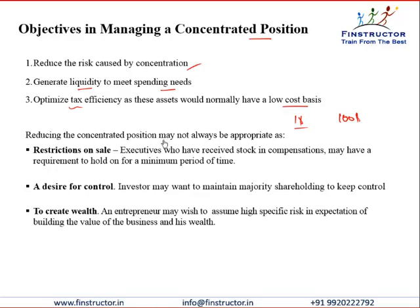Reducing the concentrated position may not always be appropriate. Simply selling it and investing the cash in other assets may not always be the best way, and may not at times be possible. There may be restrictions on sale — for example, executives who have received stock in compensation may have a requirement to hold on for a minimum period of time. There may also be a desire for control, so the investor may want to continue holding a majority shareholding in a particular company, unwilling to give up control because he wants to manage the company.